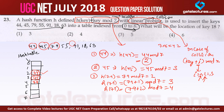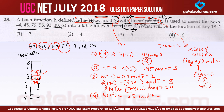Next is key 55. Hash(55) = 55 mod 7. Since 7 × 7 = 49, dividing 55 by 7 gives a remainder of 6, so 55 will be stored at index location 6.